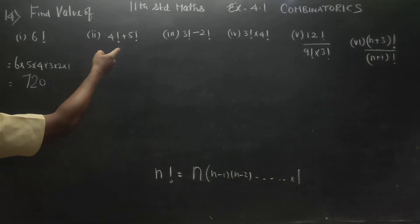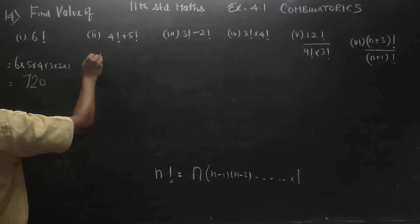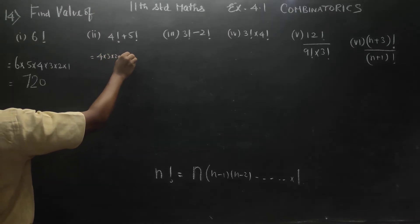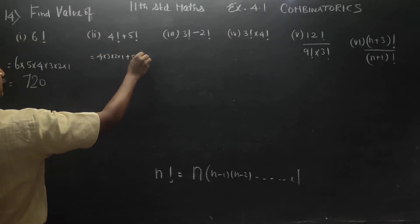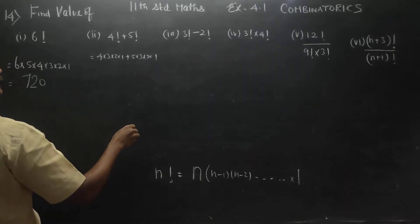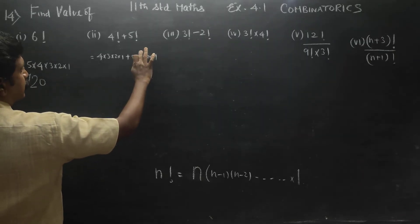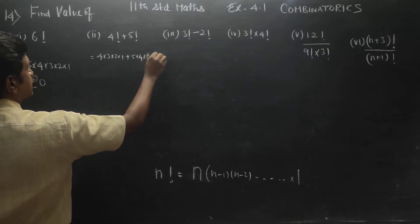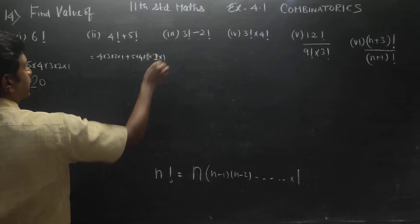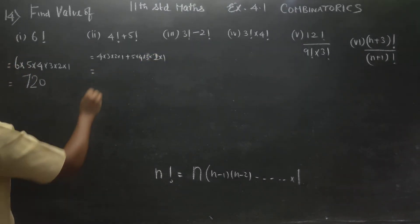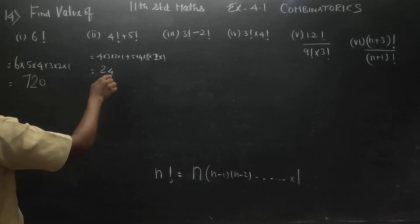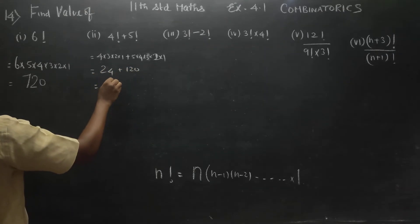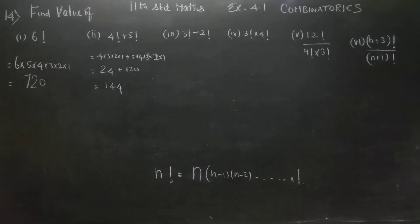4 factorial plus 5 factorial. 4 factorial is 4 into 3 into 2 into 1. 5 factorial is 5 into 4 into 3 into 2 into 1. This gives 24 plus 120. If you add it, the answer is 144.